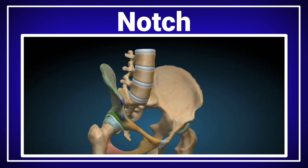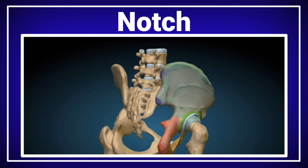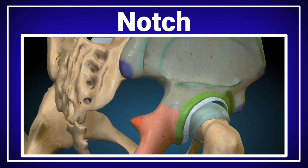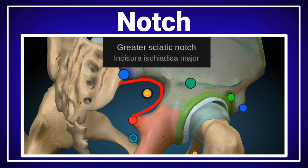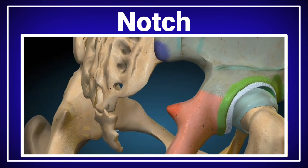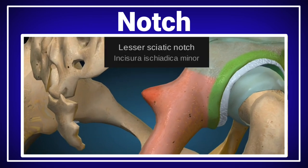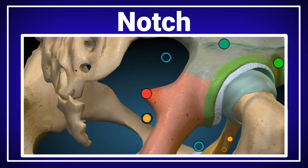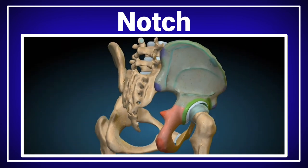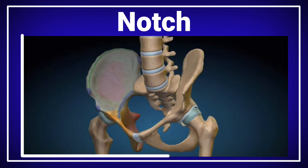A notch is a sudden depression on a bone structure. Looking at a general overview of the pelvic girdle, there are two types of notches: the greater sciatic notch, which is located superior to the lesser sciatic notch on the hip bone, and the lesser sciatic notch, which is located inferior to the greater sciatic notch. The greater sciatic notch has a large diameter, while the lesser sciatic notch has a small diameter.